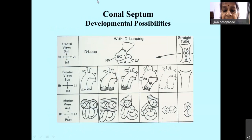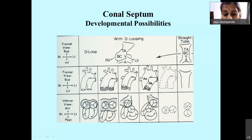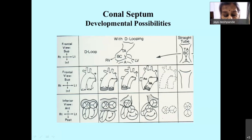This is a diagrammatic representation of the infundibulum. In the normal heart you have sub-pulmonic infundibulum and the sub-aortic infundibulum is partially deficient. In transposition of great arteries you have sub-aortic infundibulum but no sub-pulmonic infundibulum. Then you have bilateral infundibulum as seen in DORV, and complete absence of infundibulum as seen in double outlet left ventricle.